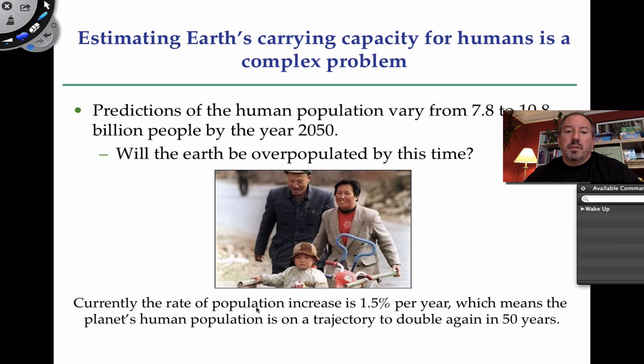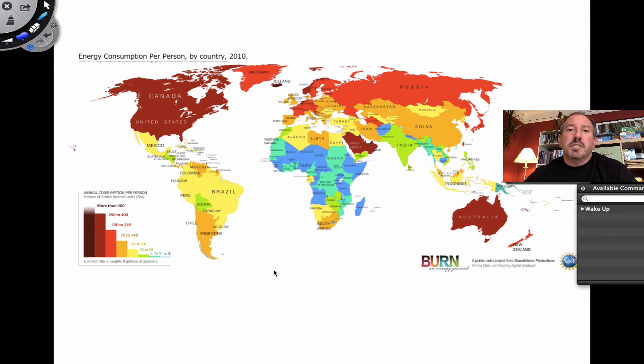Currently, when you look at the human population rate, it's one and a half percent per year, which means that the human population is on a trajectory to double in the next 50 years. That's a lot of people. And then when you consider, it's not just where are the big populations, but here's something of consideration. The United States has a big population, but when we're talking about consumption of resources, this is what this graph is getting at, like energy consumption. It's like some countries are consuming the majority of the energy, consuming a lot of the resources. That doesn't seem quite fair. And so there's a lot of issues that biology can't really address.